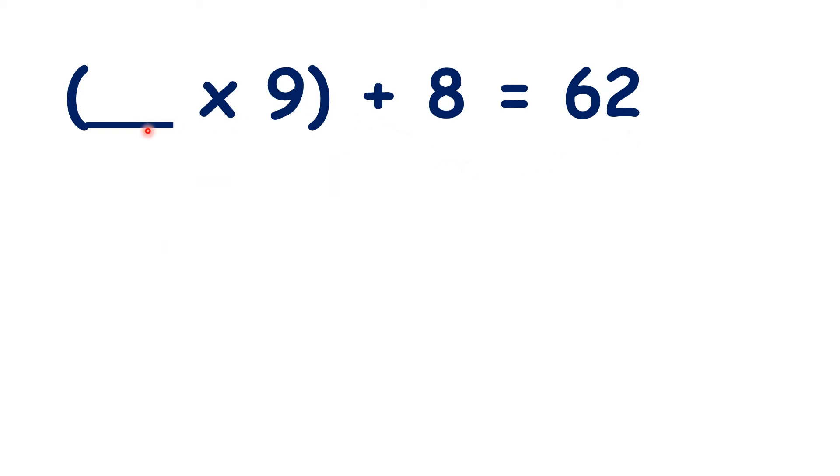Now, something times nine plus eight is 62. Pause the video and see if you can find the missing number. They added eight, so we can subtract eight to get 56. And they multiplied by nine, so we can divide by nine to get our missing number, six. Six times nine is 54, and 54 plus eight is 62.